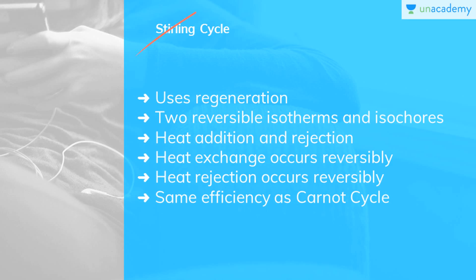The sterling cycle is a well-known gas cycle which uses regeneration. It comprises two reversible isotherms and two reversible isochores. There is heat addition at constant temperature T1 from an external source and heat rejection at constant temperature T2 to an external sink, which takes place in processes 4 to 1 and 2 to 3 respectively. Regeneration occurs reversibly between the constant volume processes 1 to 2 and 3 to 4, and the areas under 1 to 2 and 3 to 4, denoting the heat lost by the expanded fluid and gained by the compressed fluid, are equal.